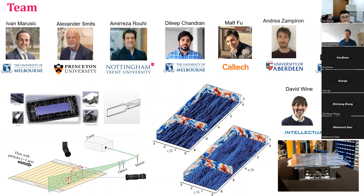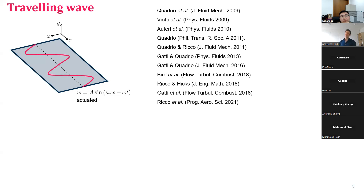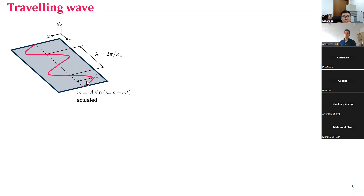I'm discussing drag reduction using traveling wave actuation, an idea sparked by Quadrio et al. in 2009 and extensively studied since. The principle is that a flat surface oscillates in the spanwise direction following a sinusoidal motion. The spanwise velocity W has amplitude A and wavelength λ, and this mechanism generates a traveling wave into the flow.